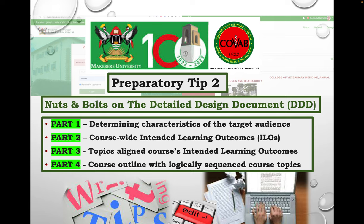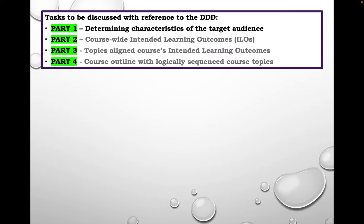The nuts and bolts we are going to look at in tip 2 include: determining the characteristics of the audience; looking at the course-wide intended learning outcomes, ILOs; aligning topics to the intended learning outcomes that we have generated; and lastly synthesizing a course outline with logically sequenced course topics. So let's look at part 1.